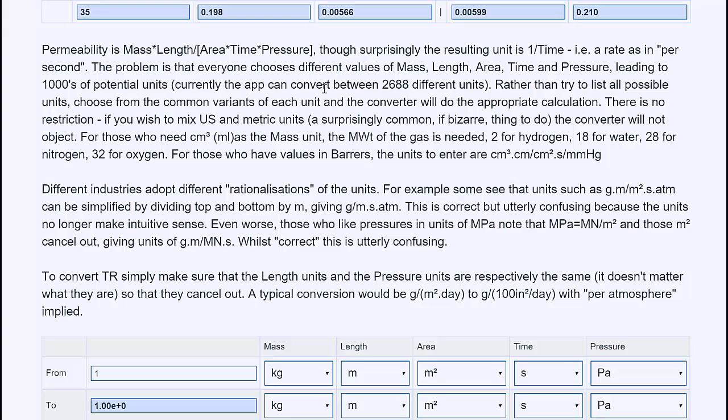The trouble is that everyone chooses different values of mass, length, area, time, and pressure. And there are thousands of potential units. This app can convert between 2,688 different units.